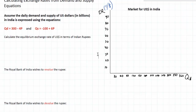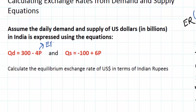We can assume that the daily demand and supply of dollars in billions in India is expressed using these equations. Quantity demanded equals 300 billion minus 4 times the price, where the price represents the exchange rate. And the quantity supplied of dollars equals negative 100 plus 6 times the price, where again the price represents the exchange rate.